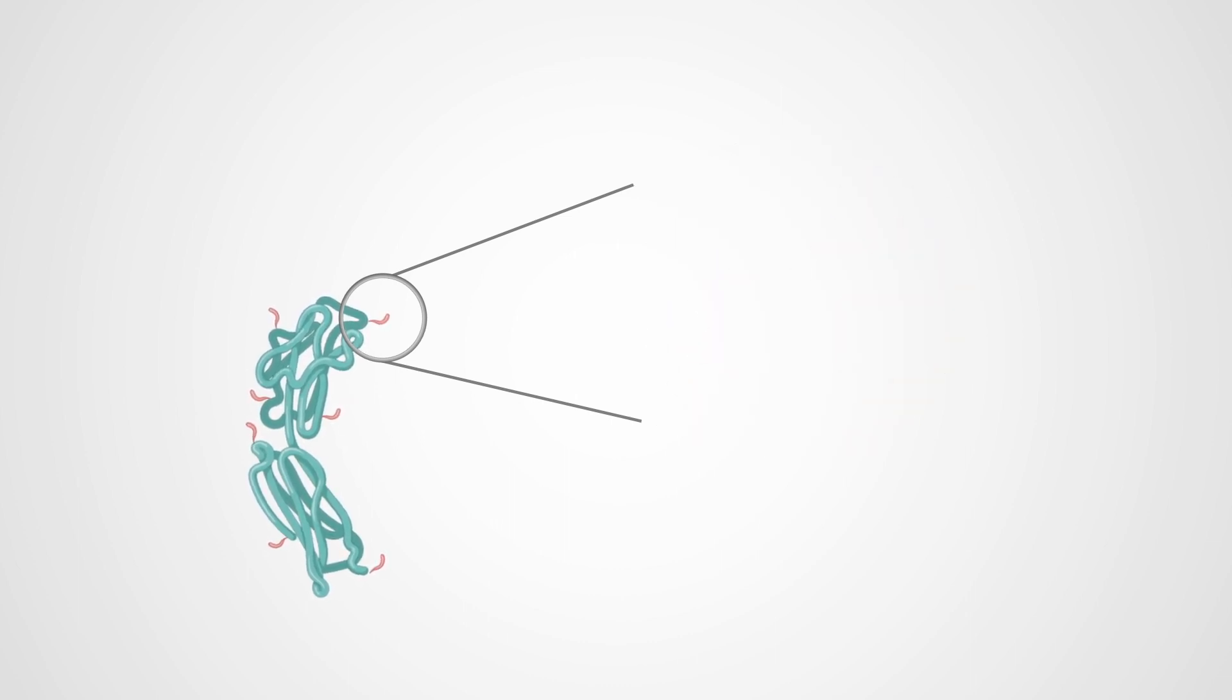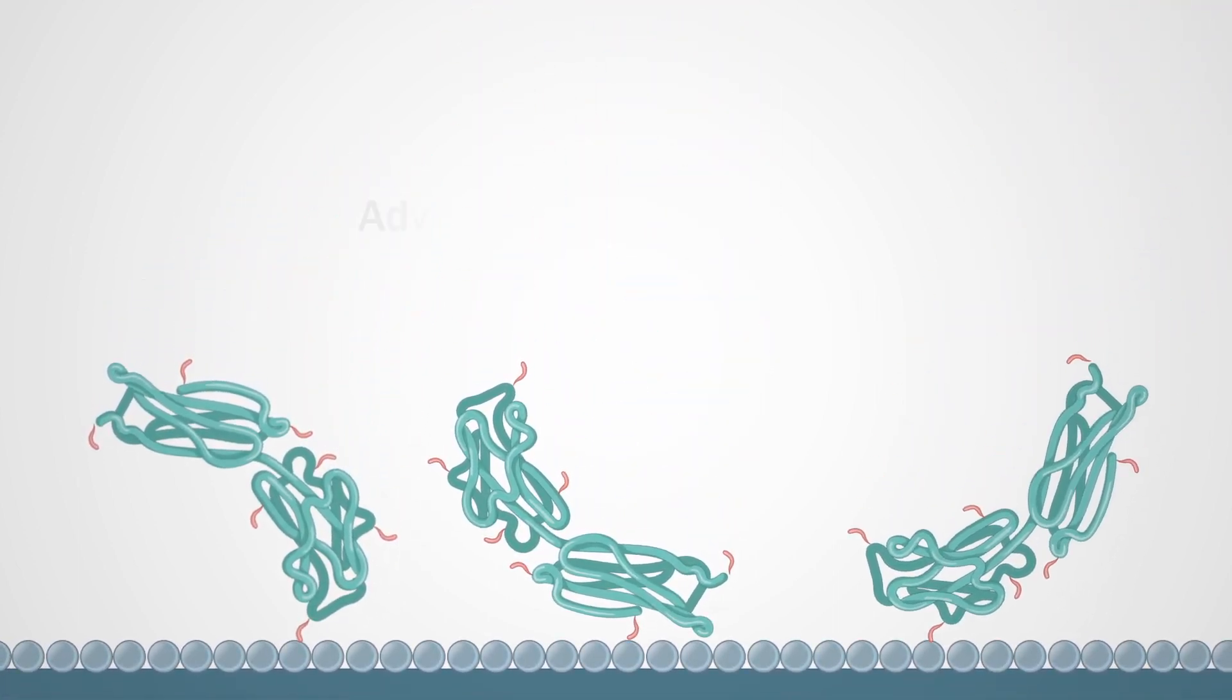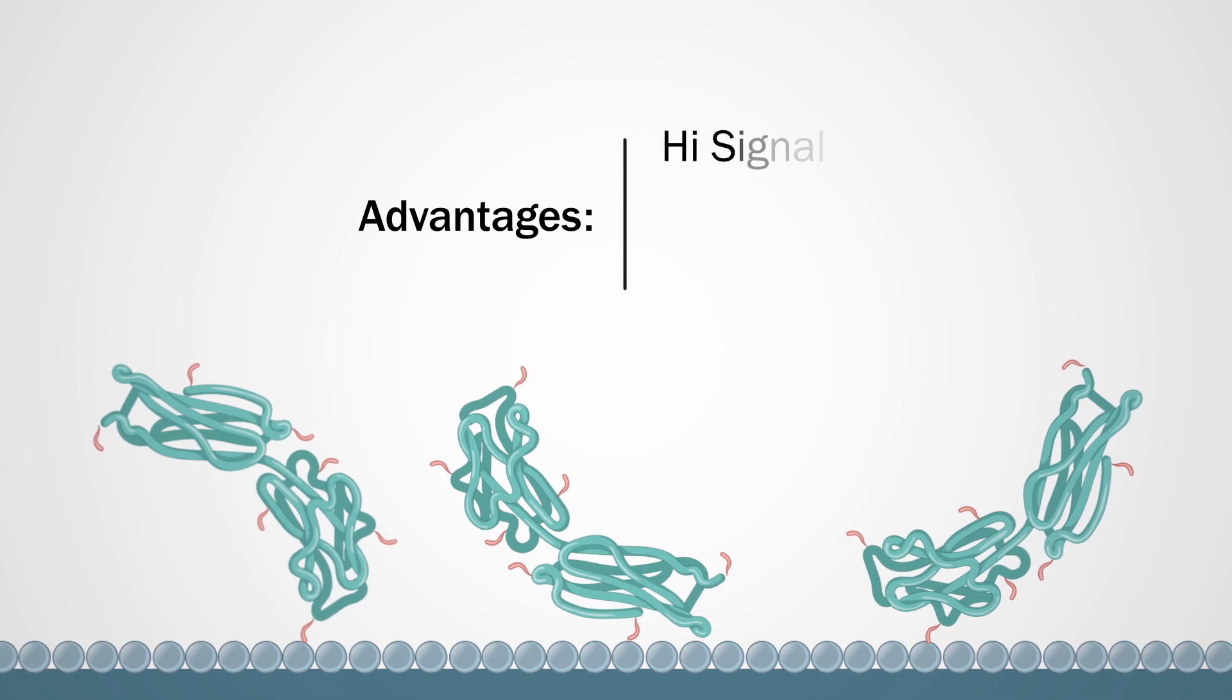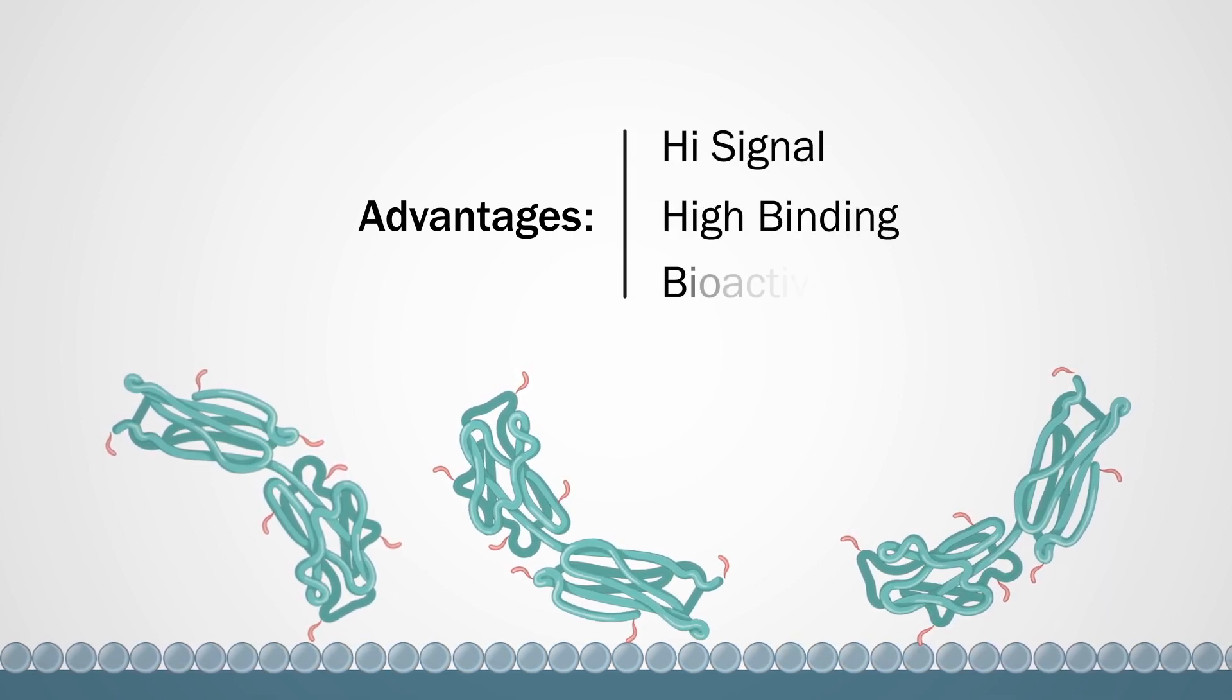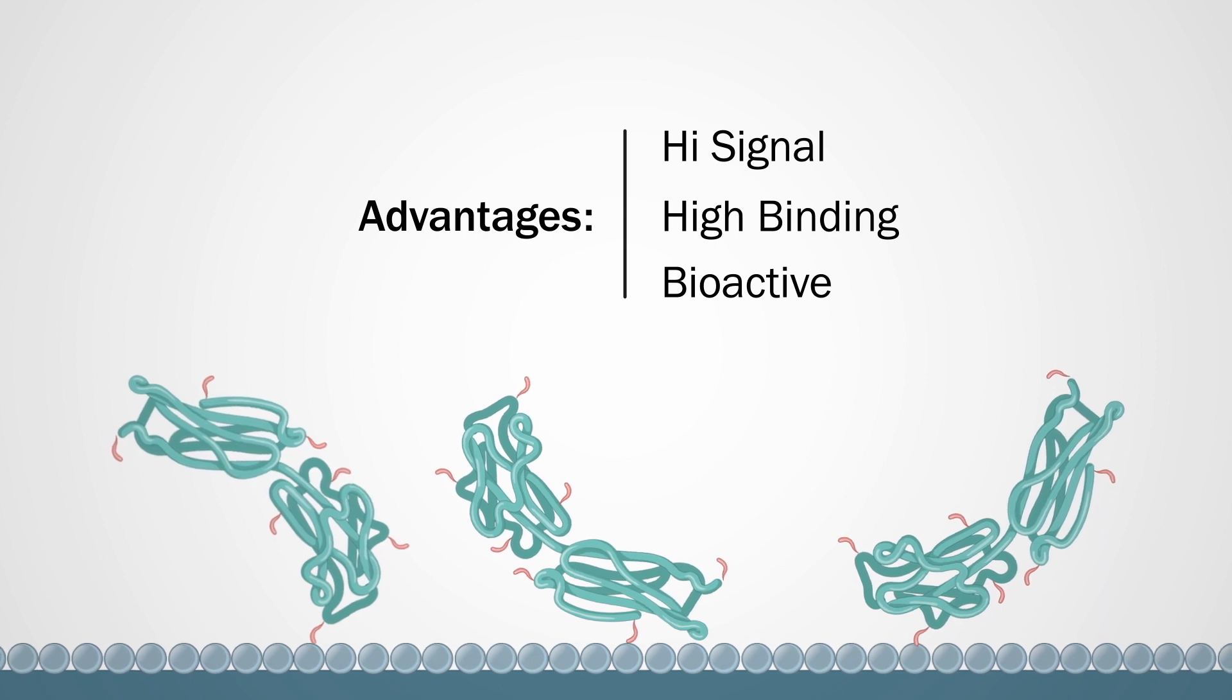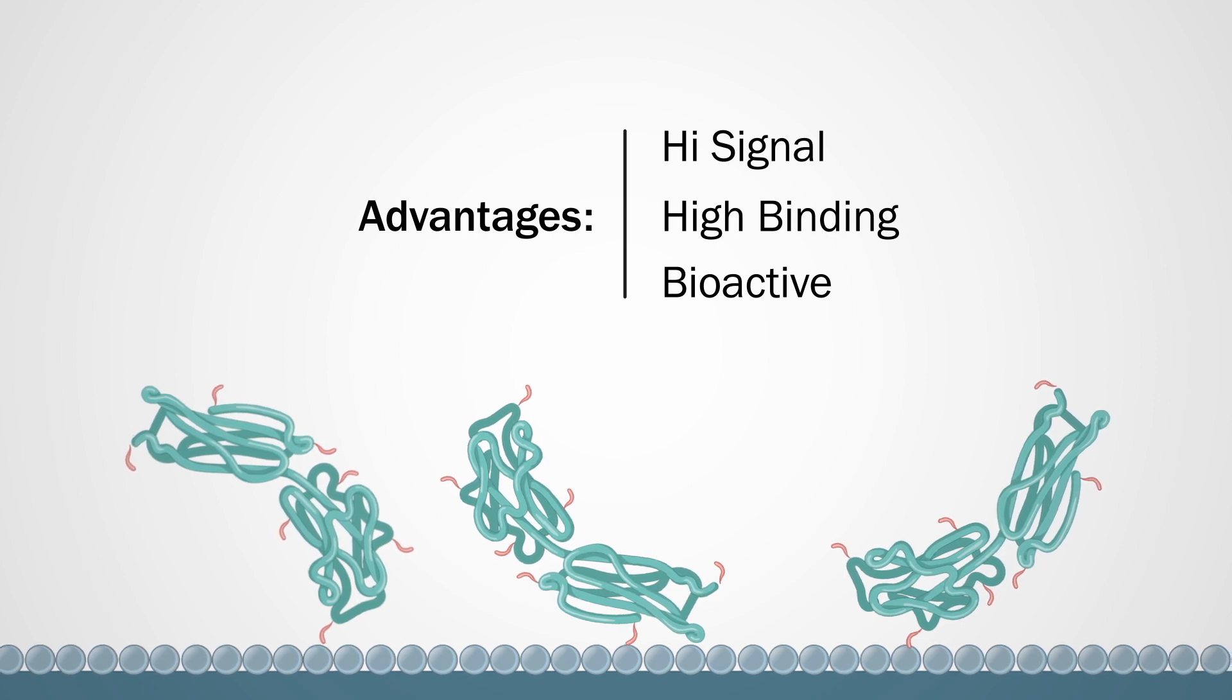The end result is a biotinylated protein with a high biotin-to-protein ratio, important for applications requiring high signal strength and binding efficiency. Amine biotinylated proteins are designed for use in ELISA, immunoprecipitation, SPR, flow cytometry, and other applications.